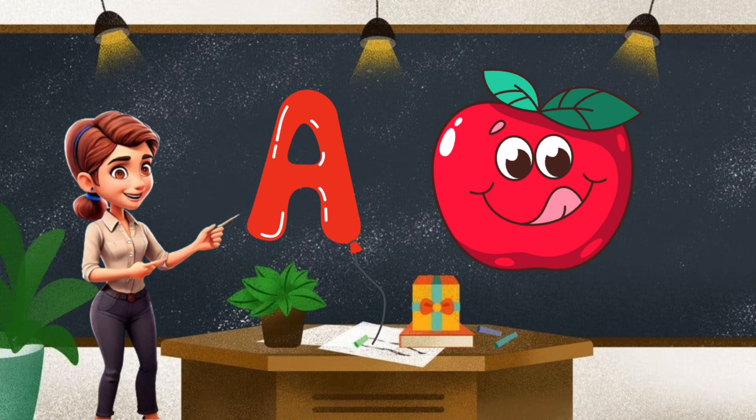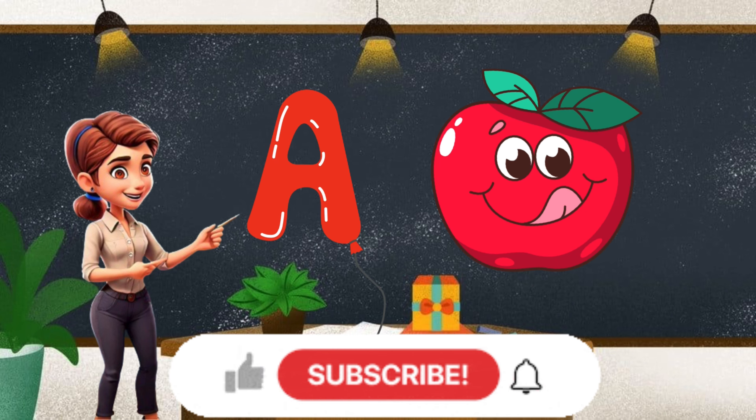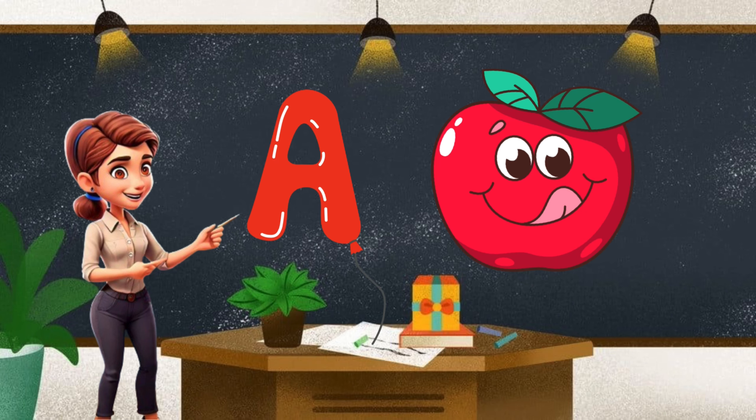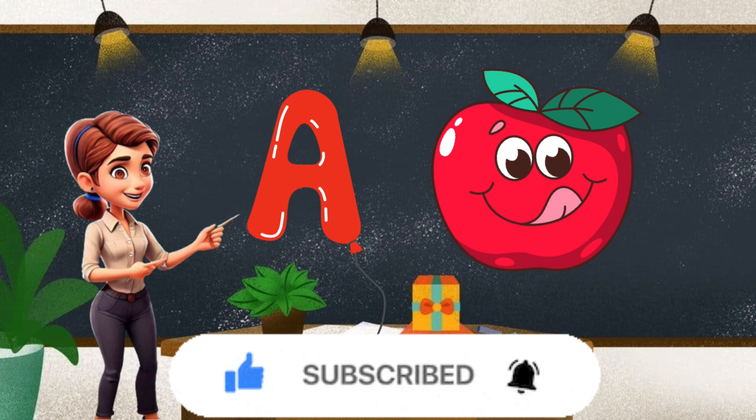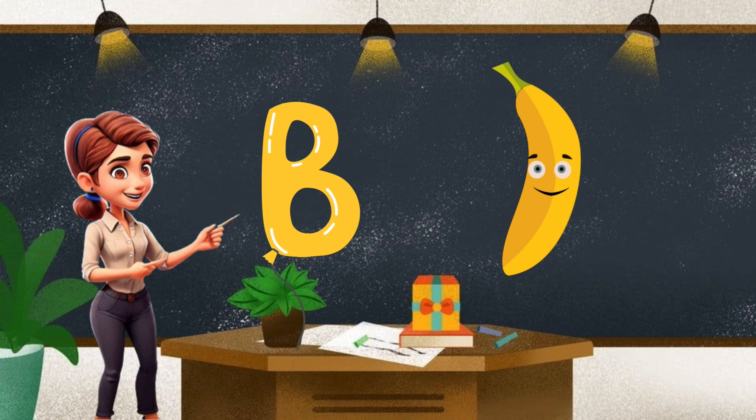A. A for apple and the color is red. B. B for banana, yellow.